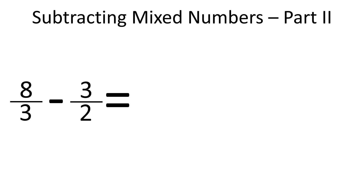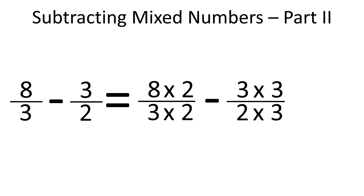Now we have 8 over 3 minus 3 over 2. Before we subtract the numerators, we have to rewrite them one more time. As each fraction has a different denominator, we have to rewrite them as equivalent fractions with the same denominator. The least common multiple for 2 and 3 is 6, so 6 is the common denominator. To convert 8 over 3 to an equivalent fraction with 6 in the denominator, we multiply both the denominator and numerator by 2.